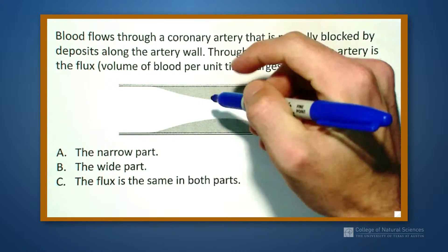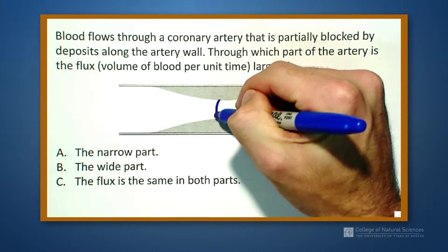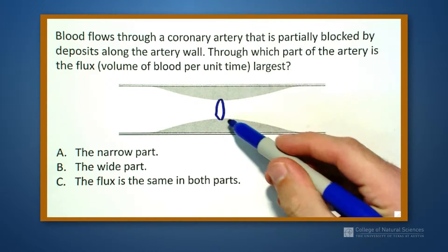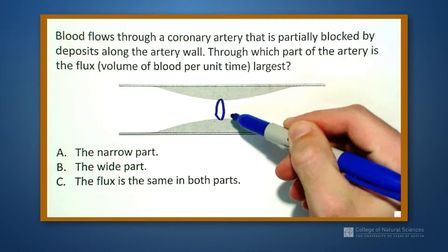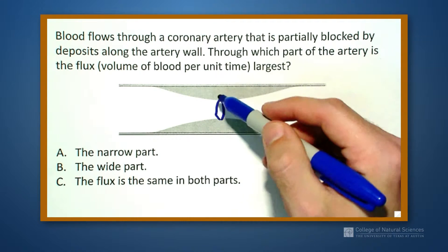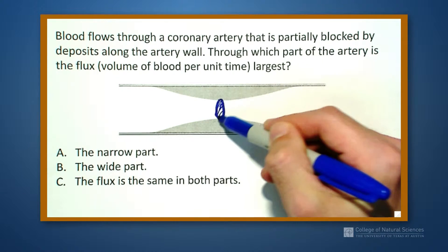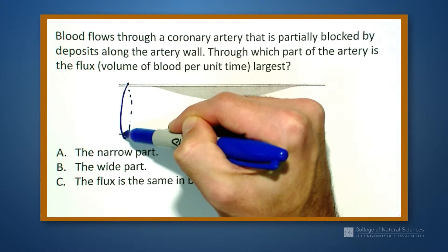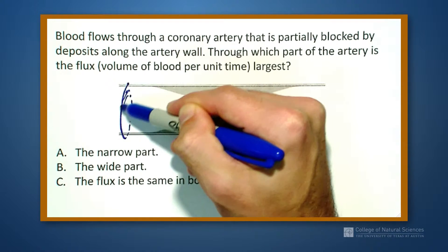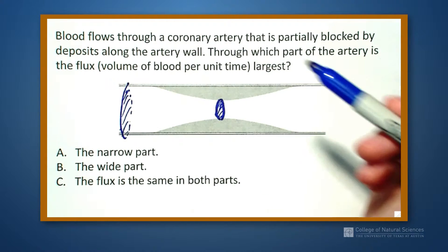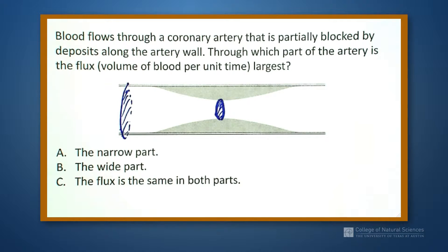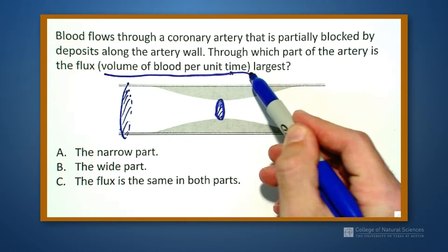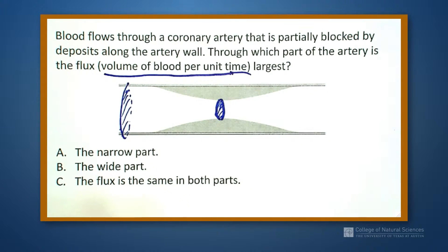When we look at the concept of flux, if we think of a little cross-sectional area here, we want to know how much passes this point compared to how much passes that point in a unit time. The volume of blood per unit time — that's what we call flux.